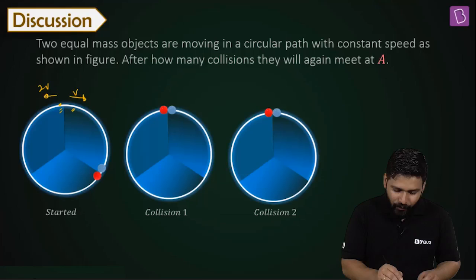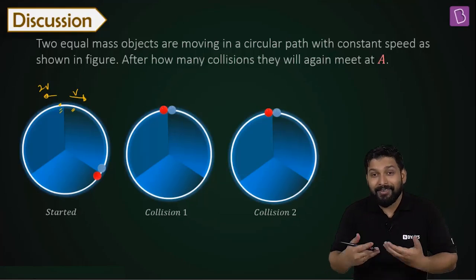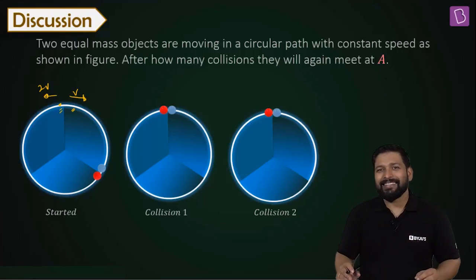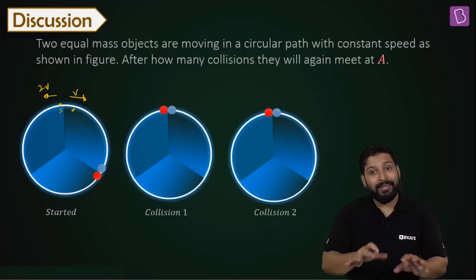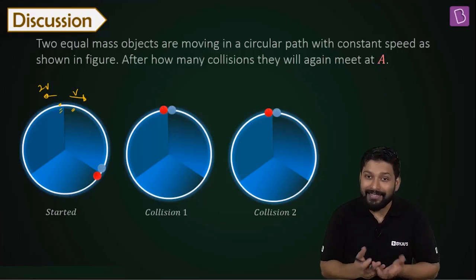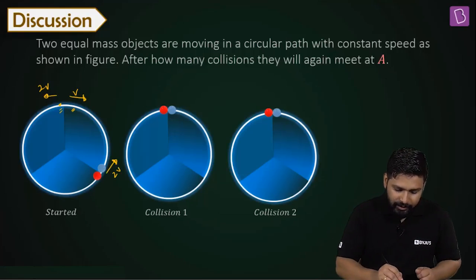But once they have met over here, their velocities will get exchanged. That's the game, guys. That's the game. Because there are equal masses, the collision is elastic in nature, so the velocities will get exchanged. And if the velocities get exchanged, this starts traveling with 2V now. And this starts traveling with V.